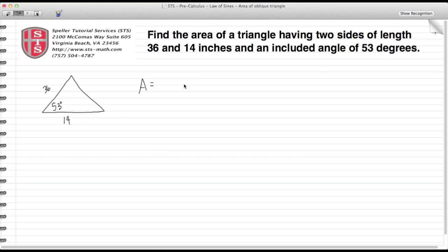The area of an oblique triangle is defined as one-half times side B times side C times the sine of angle A. It can also be defined as one-half times A times B times the sine of angle C, or it can be defined as one-half times A times C times the sine of B.